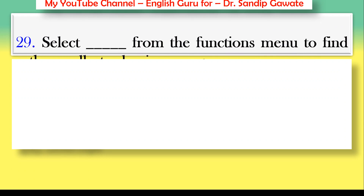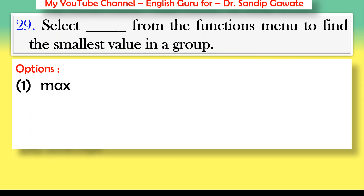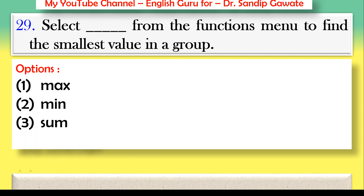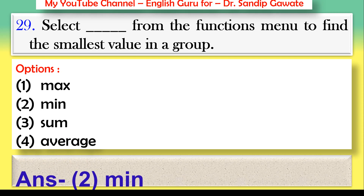Question 29: Select which function from the functions menu to find the smallest value in a group. Options: MAX, MEAN, SUM, or AVERAGE. The correct answer is option number two — MEAN.